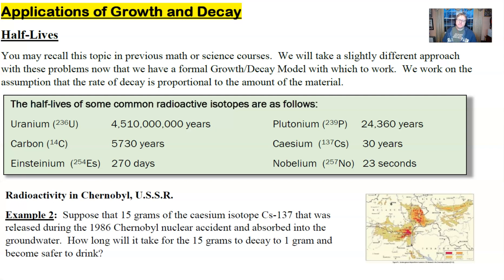You might recall this topic if you took a chemistry class or maybe some other math course that dived into this application of exponential growth or exponential decay. But we're going to take a different approach because we now have this formal growth and decay model, our good friend Ce^(kt). We're going to work on the assumption that the rate of decay is proportional to the amount of the material — the more material there is, the faster it decays.